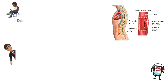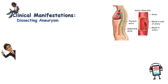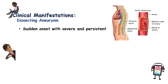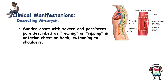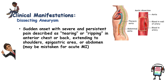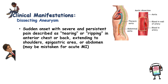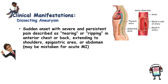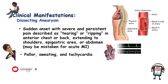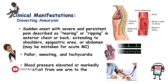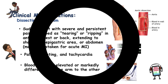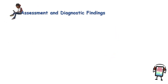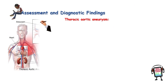Clinical manifestations of dissecting aneurysm: sudden onset with severe and persistent pain described as tearing or ripping in the anterior chest or back, extending to the shoulders, epigastric area, or abdomen. This can be mistaken for myocardial infarction. Other signs include pallor, sweating, and tachycardia. Blood pressure may be elevated or markedly different from one arm to the other.